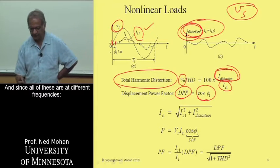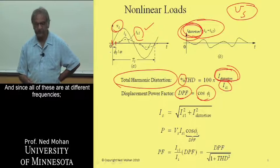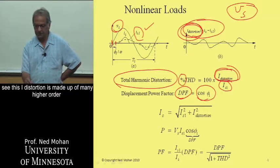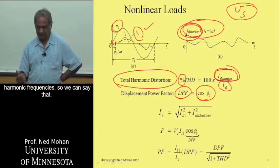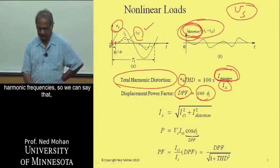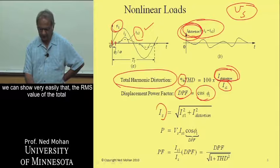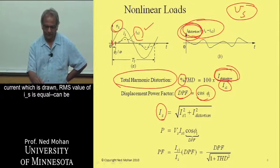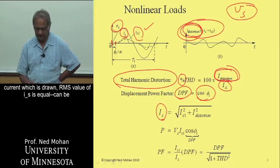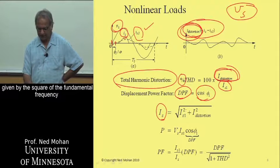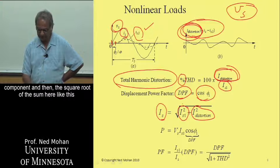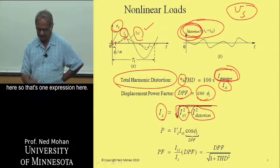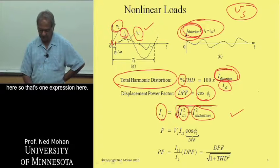And since all of these are at different frequencies—this I distortion is made up of many higher order harmonic frequencies—we can show very easily that the RMS value of the total current which is drawn, RMS value of IS, is equal, can be given by the square of the fundamental frequency component plus the square of the distortion frequency component, and then the square root of the sum here. So that's one expression here.